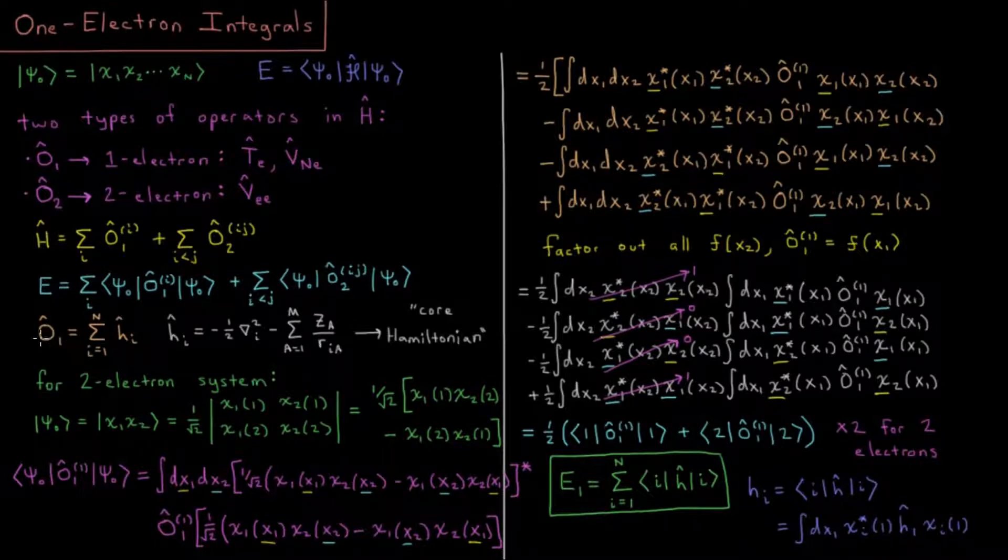That's going to be a sum from i equals 1 to n of our Hᵢ one-electron operators, or what we might call our core Hamiltonian operator.